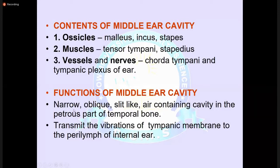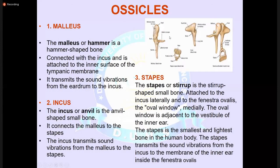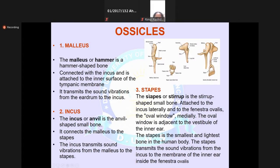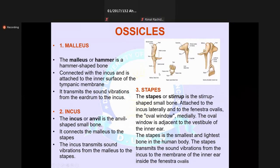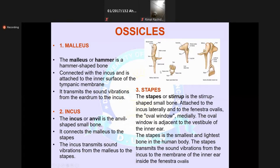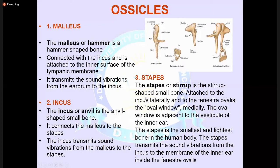The function of the middle ear is to transmit vibrations from the tympanic membrane to the perilymph of the inner ear. It is a narrow oblique slit-like air-containing cavity in the petrous part of the temporal bone. There are three ossicles: malleus (hammer-shaped), incus (anvil), and stapes (stirrup).